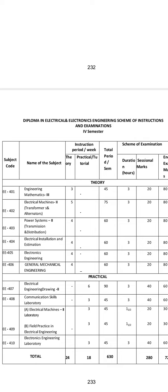That means, in C20, the 4th semester has 6 subjects along with 4 labs. Subject codes include 407, and also electrical engineering drawing — 408, 409, and 4010. These 3 subjects, and also 408 is communication skills laboratory.